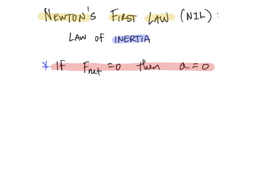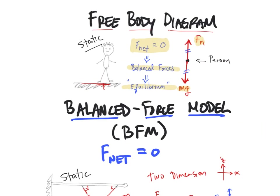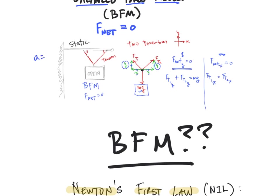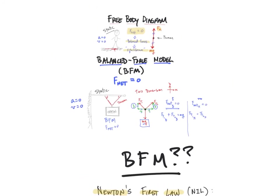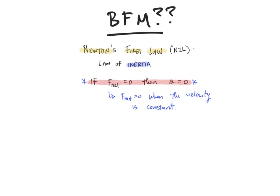That means that if the velocity is constant, then F net is zero. In the case of the person standing there, the velocity was constant — acceleration is zero, it just happens that the constant velocity is zero. Similarly, for the sign, A was zero and V was zero. So both were net force zero cases. But it's entirely possible to have a balanced force situation when the velocity is not zero.